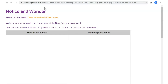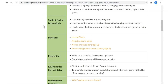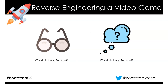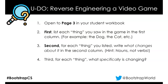Great. Hopefully you have some things filled in that you notice and wonder, and we will use those ideas as we go forward. Since you just did that with your partner and we can't talk to each other, you and your partner hopefully already talked about what you noticed and what you wondered. If you haven't yet, feel free to pause right now and have a dialogue with your partner about what you noticed and what you wonder. Now we're going to continue reverse engineering this game. That's terminology we use in computer science a lot, especially with gaming — where we take an existing thing like the NinjaCat game and try to figure out how it works.